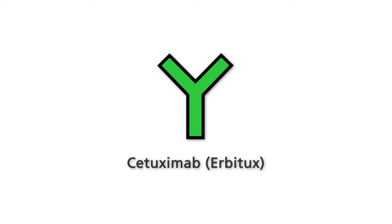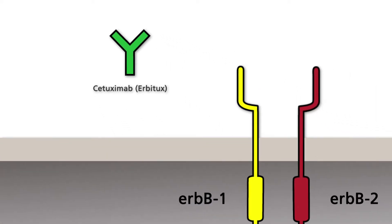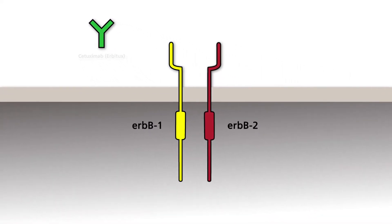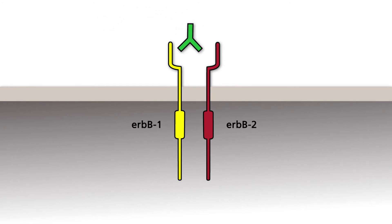The antibody Cetuximab, registered trade name Erbitux, is a prominent example of an antibody that targets EGF receptors. Cetuximab binds to an antigenic site within the extracellular domain of the EGF receptor, ERB-B1, and inhibits the binding of its ligand, EGF.